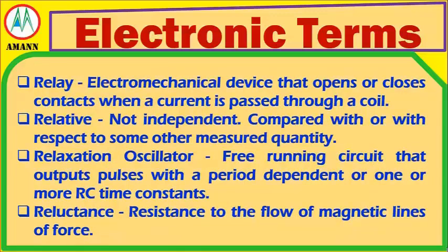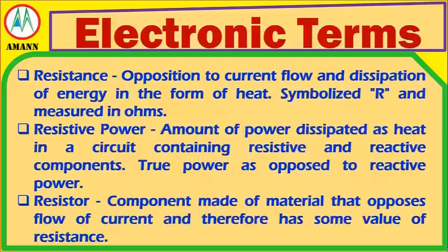Relay: an electromechanical device that opens or closes contacts when a current is passed through a coil. Relative: not independent; compared with or with respect to some other measured quantity. Relaxation Oscillator: a free-running circuit that outputs pulses with a period dependent on one or more RC time constants. Reluctance: a resistance to the flow of magnetic lines of force. Resistance: an opposition to current flow and dissipation of energy in the form of heat, symbolized R and measured in ohms.